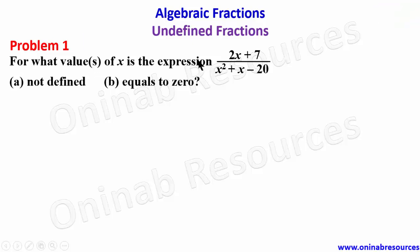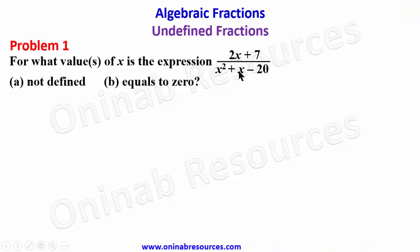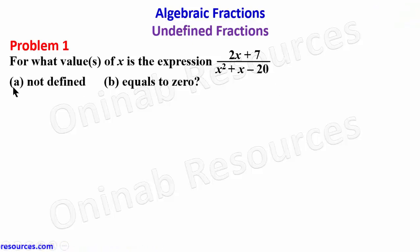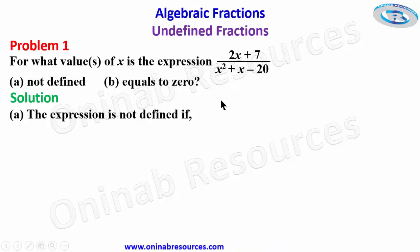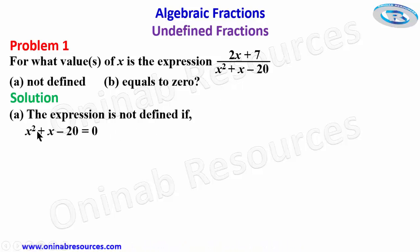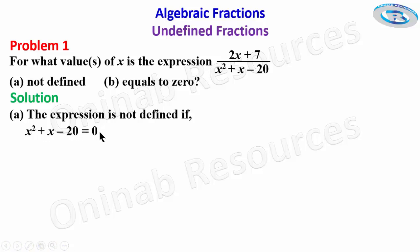For problem one: for what value or values of x is the expression (2x + 7) over (x² + x − 20) — (a) not defined, and (b) equal to zero? Starting from part (a), the expression is not defined if the denominator is equal to zero, so we equate the denominator to zero: x² + x − 20 = 0.